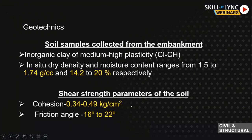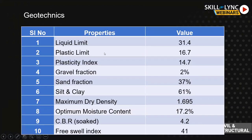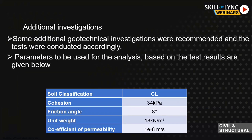Shear strength parameters of the soil and other laboratory values were also available. We studied these laboratory test results to understand what happened after operation. Almost all laboratory values were from before operation. We recommended additional geotechnical investigations — suggesting three to four boreholes at the embankment — and had those investigations carried out.